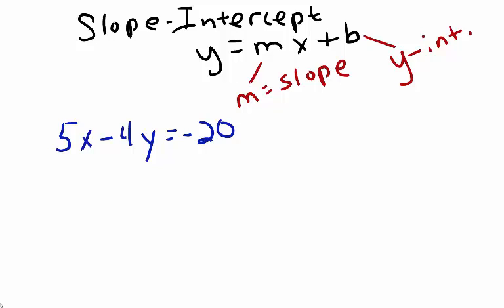I'll begin by subtracting 5x from both sides using the properties of inverse operations. That leaves me with negative 4y equals negative 5x minus 20.